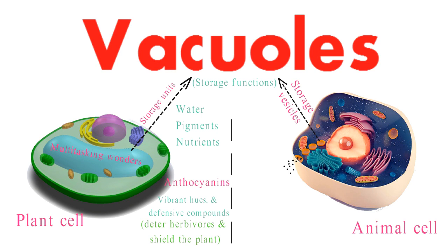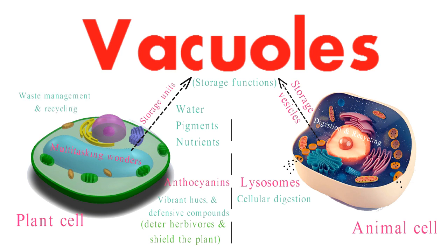In the realm of animal cells, lysosomes take on the critical role of cellular digestion. These specialized vacuoles fuse with incoming vesicles, initiating digestion and recycling processes. Similarly, plant cells harness their vacuoles for waste management and recycling.